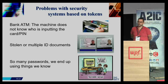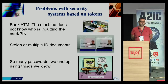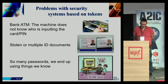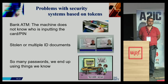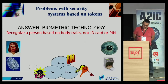For example, with a bank ATM, the machine doesn't really know who is inputting the card — you can share the PIN with your partner or daughter and different people can get the same privilege. In the case of multiple ID documents, there is no easy way to check if one person has different passports unless this is analyzed automatically by a biometric system. Today we have so many passwords that we end up reusing the same one, making us vulnerable to social engineering.